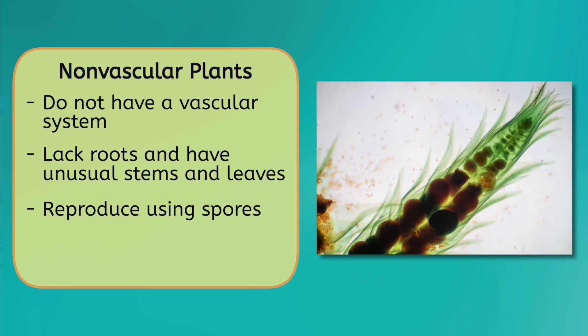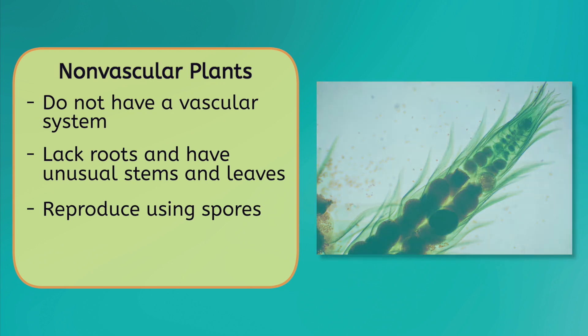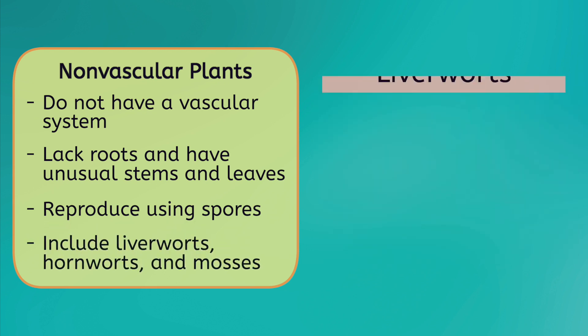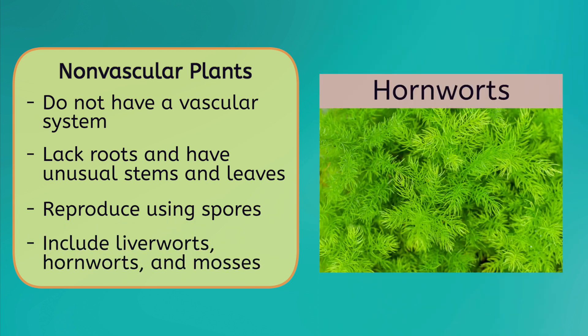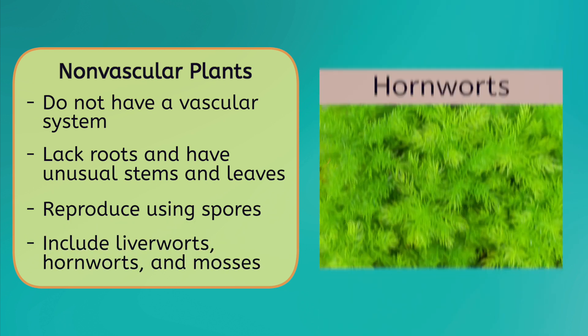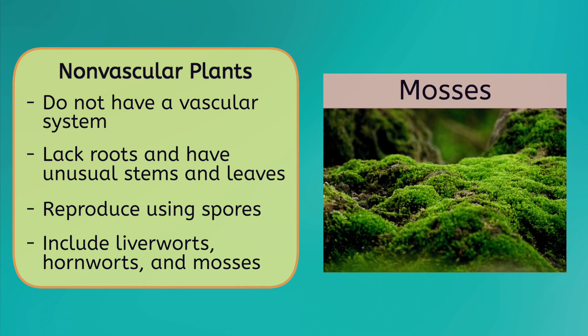These spores are carried off to a new area by the wind or a passing critter, where they take up residence and begin to grow. Some examples include liverworts, hornworts, and mosses, which you can find covering the ground, trees, or rocks in places all over the earth.